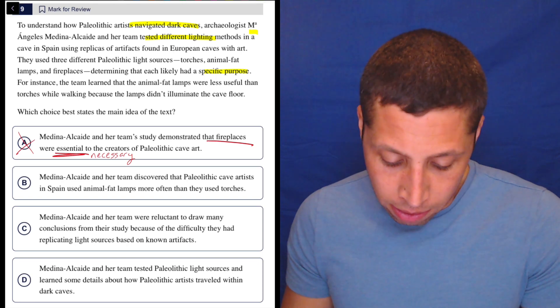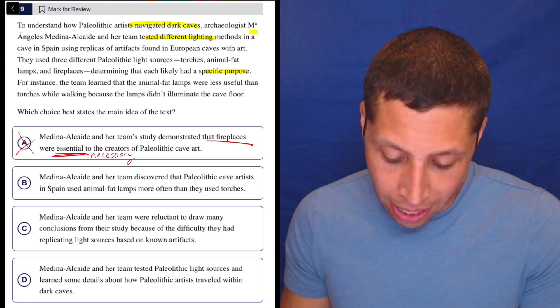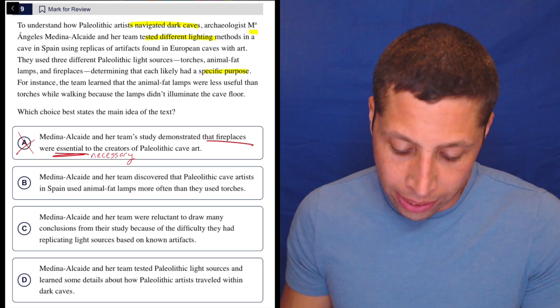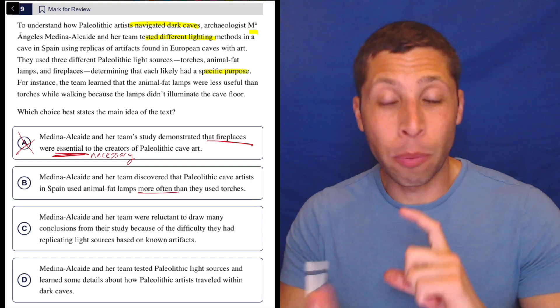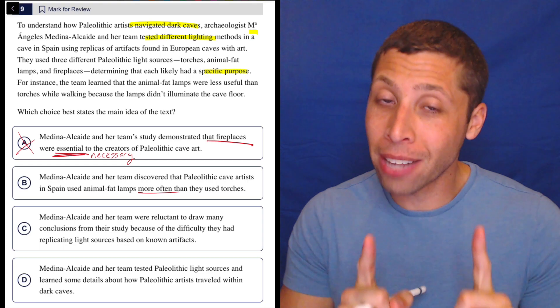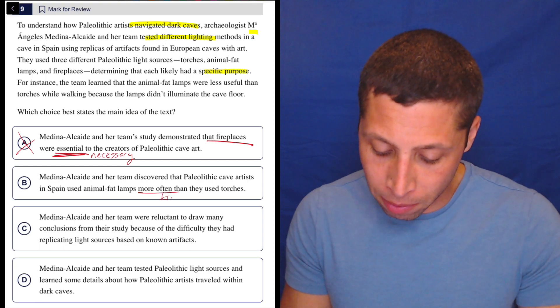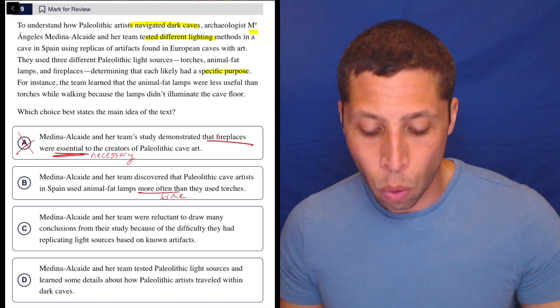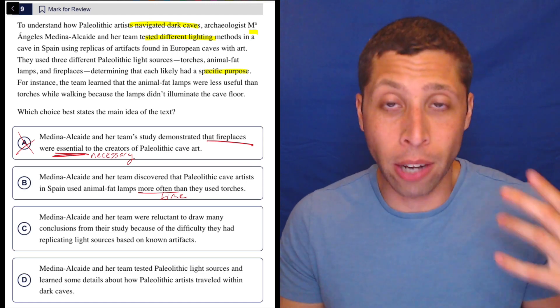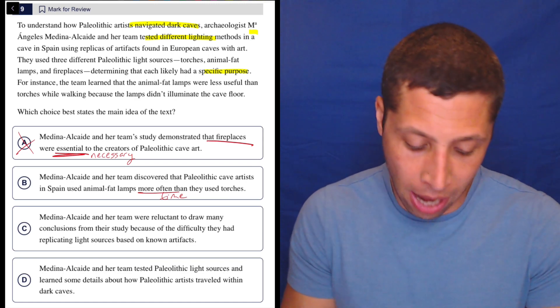Medina Al-Sayed and her team discovered that Paleolithic cave artists in Spain used animal fat lamps more often than they used torches. Again, we're ranking. Did we rank? No, we didn't rank in the passage, but also now we're bringing that concept of time, and I don't think the passage brought in time either. It wasn't saying which one they used more or less often. That's just not part of this.